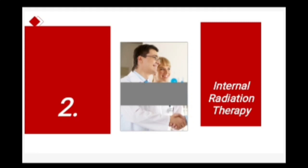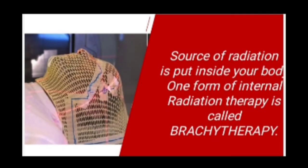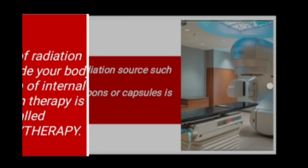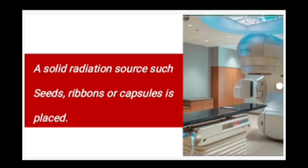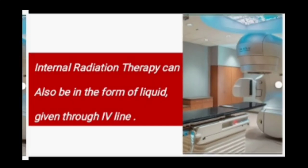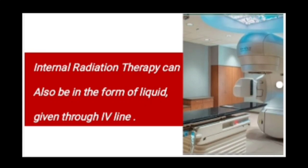The second type is internal radiation therapy, where a source of radiation is placed inside your body. One form is called brachytherapy, which uses a solid radiation source such as seeds, ribbons, or capsules placed inside your body using a catheter line. Internal radiation therapy can also be given in the form of a liquid through an IV line.